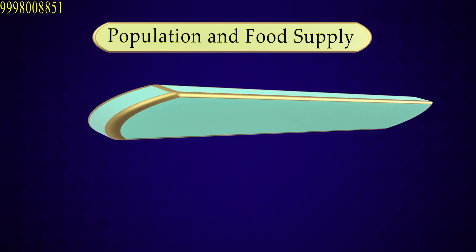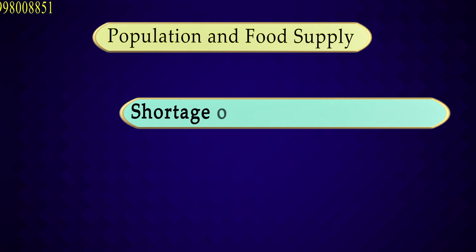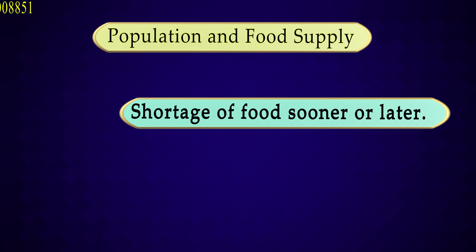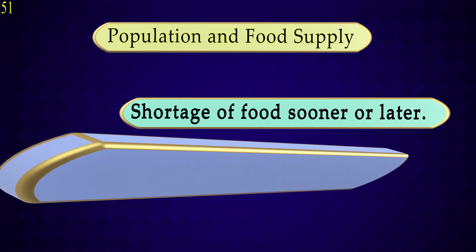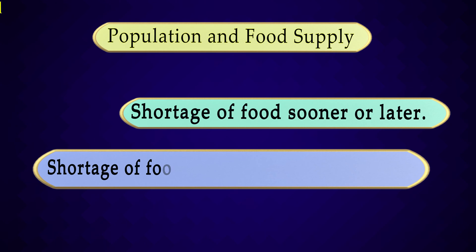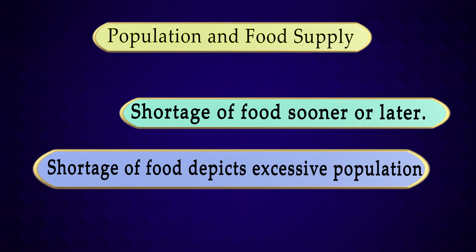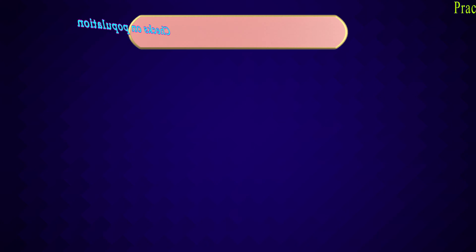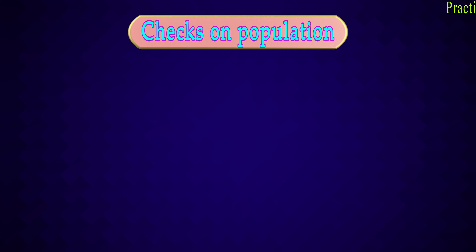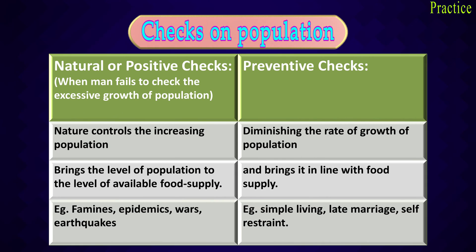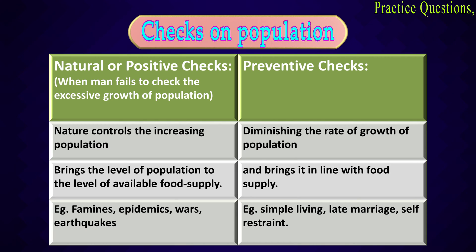There will be a shortage of food sooner or later, and this shortage of food is related to excessive population which needs to be checked. Malthus has suggested two ways to check population: one is natural checks — how nature checks — and the second is preventive checks, when humans have to impose some checks.